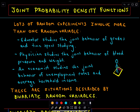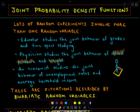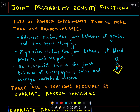To get us started, let's look at some examples. Lots of random experiments involve more than one random variable. For example, an educator might study the joint behavior of your grades and the time you spent studying. A physician may be interested in blood pressure and a person's weight. An economist may study the joint behavior of unemployment rates and the average household income.